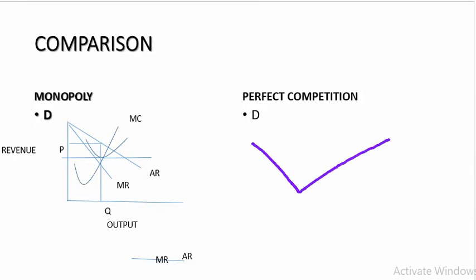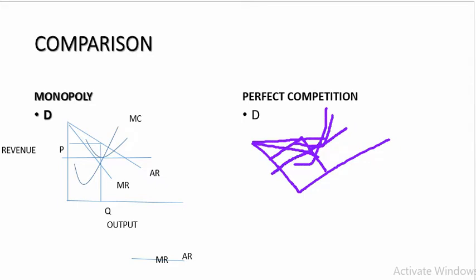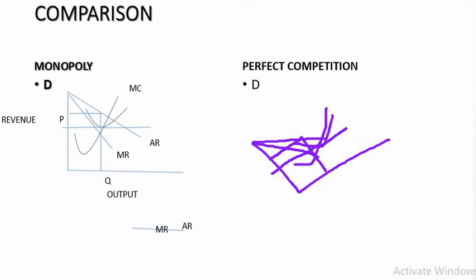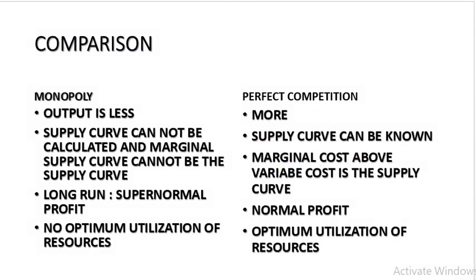Looking at the graph: AR curve, MR curve, average cost, and MC which passes through the minimum point. The point of equilibrium is where MC equals MR. The price charged under monopoly is higher, and the price charged under perfect competition is lower. Output is more under perfect competition as compared to monopoly — output under monopoly is less, under perfect competition it is more.